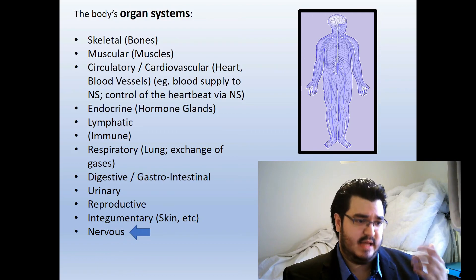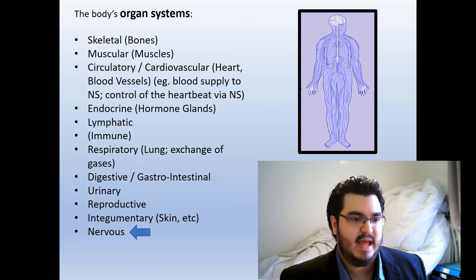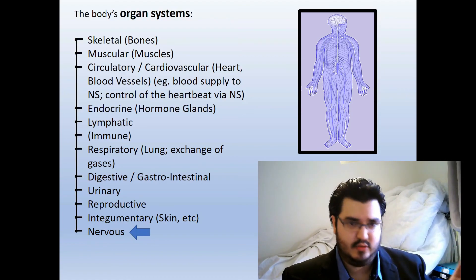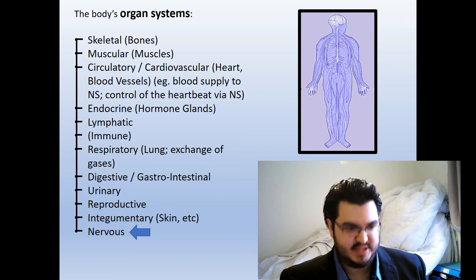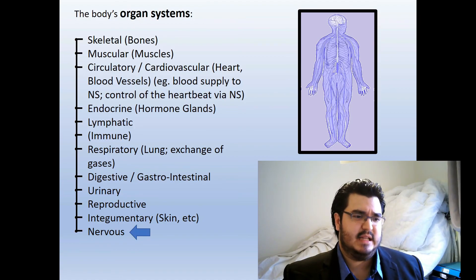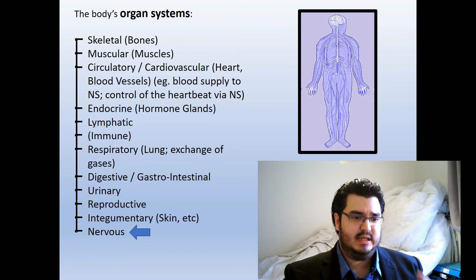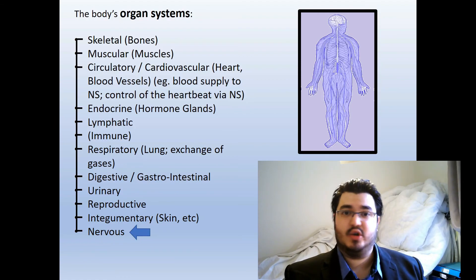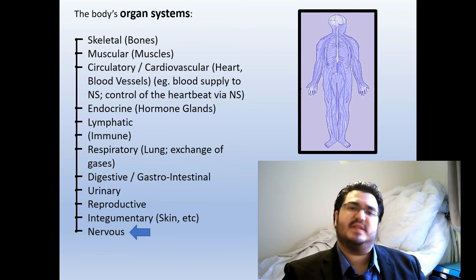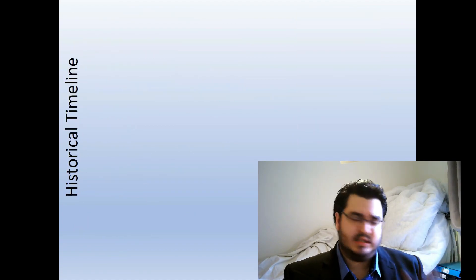Rodents have been studied for a long time and are a key model organism in neuroscience. The nervous system is one of many organ systems — alongside the skeletal, muscular, circulatory, and endocrine systems, among others. The important thing to understand is that the nervous system is intrinsically interconnected with all the other systems. For example, it relies on the cardiovascular system for blood supply, and is closely linked to the endocrine, respiratory, and digestive systems. You can't study the nervous system without that greater context.